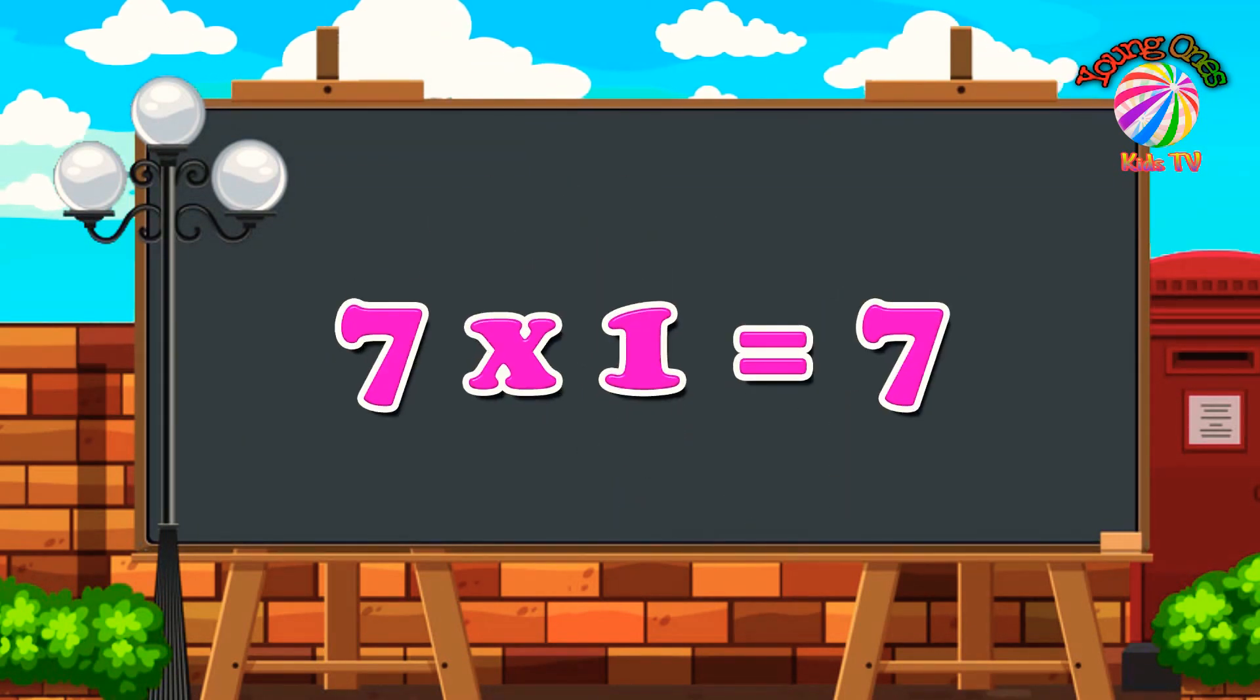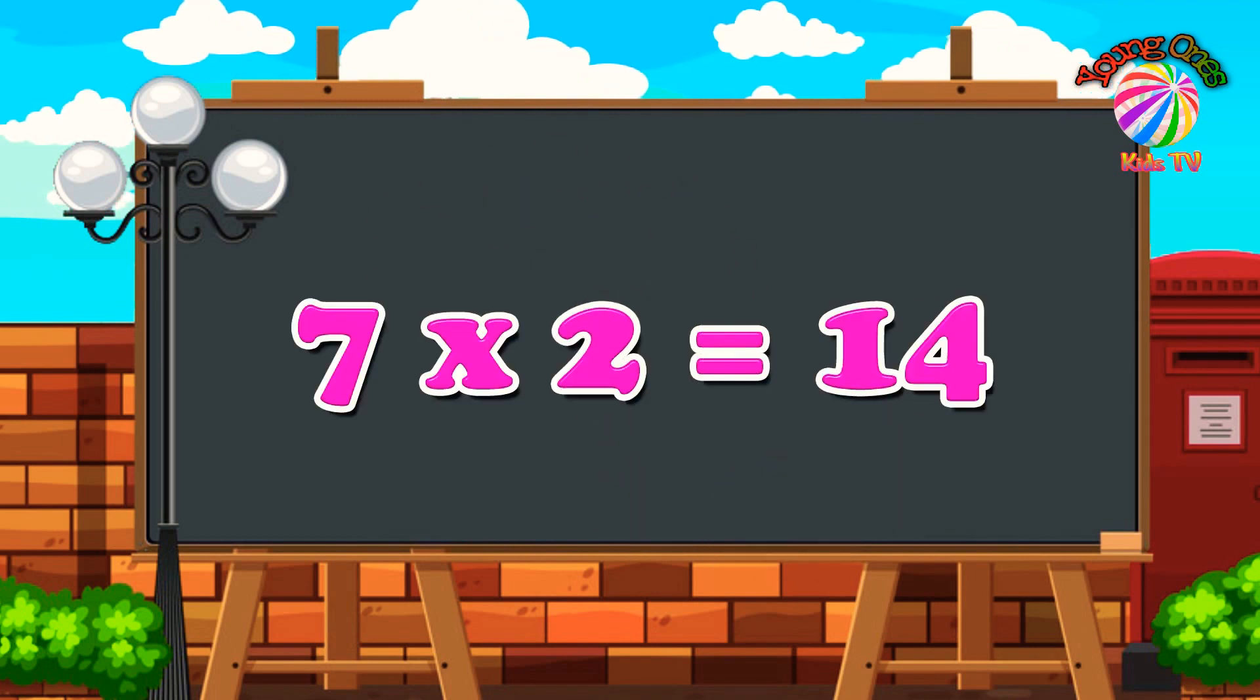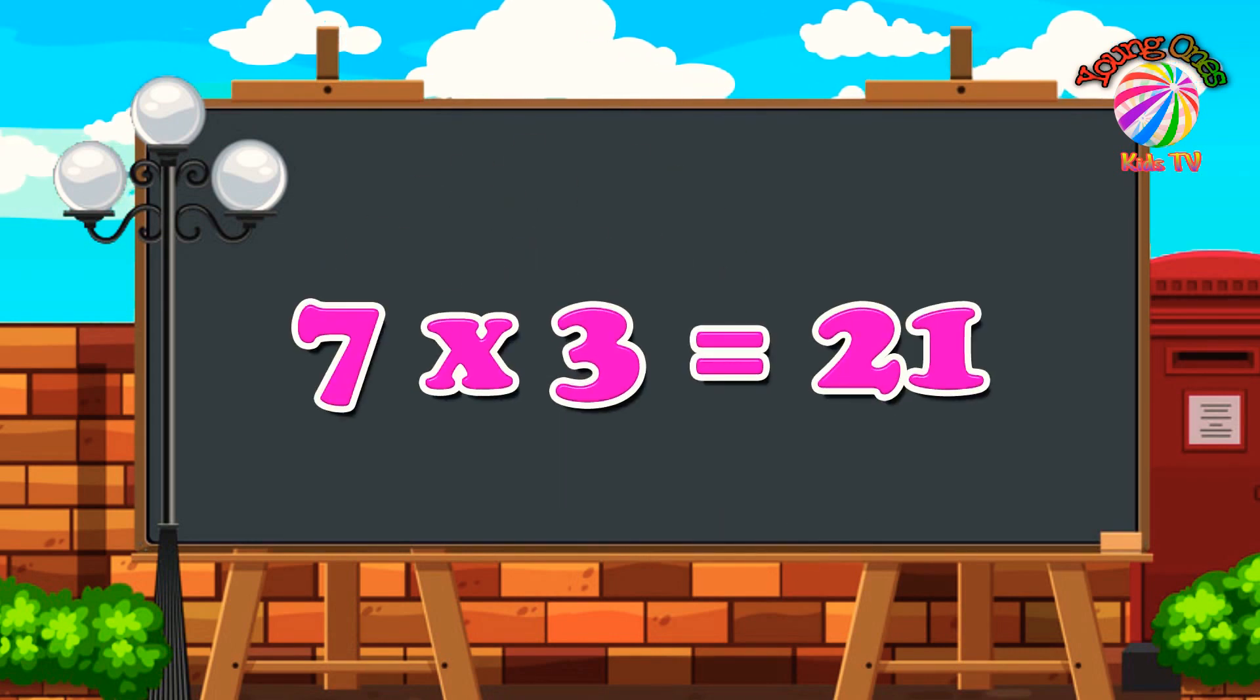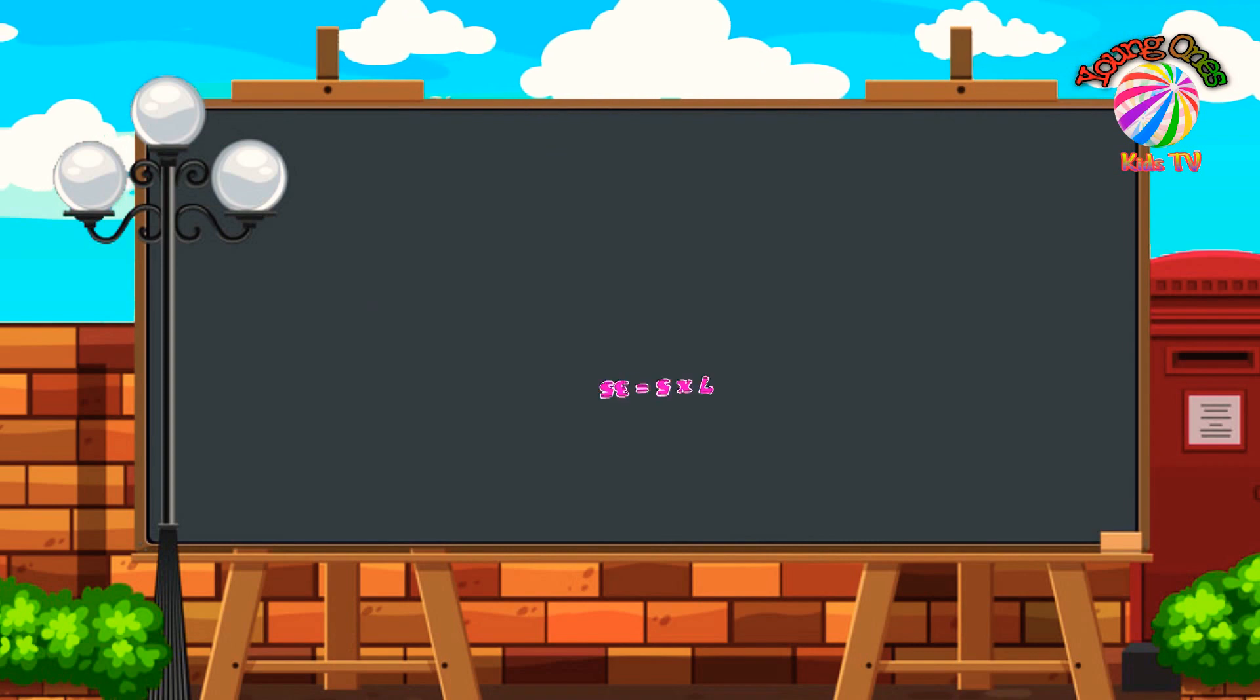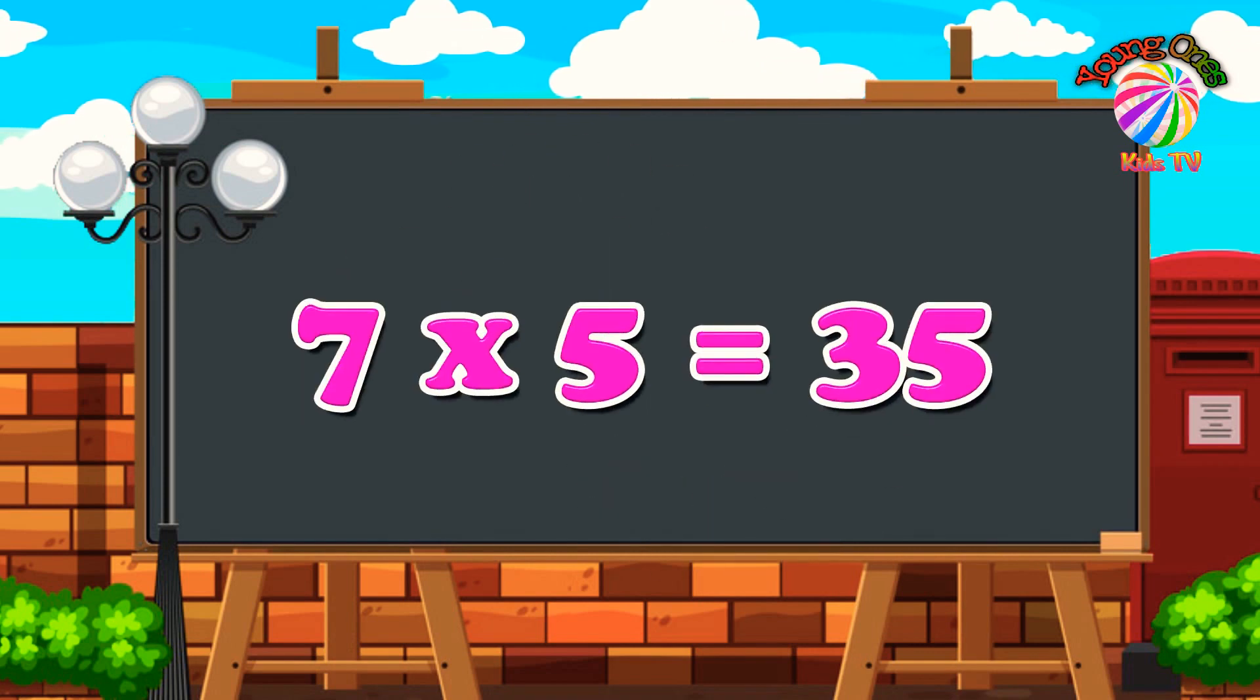7 times 1 equals 7. 7 times 2 equals 14. 7 times 3 equals 21. 7 times 4 equals 28. 7 times 5 equals 35.